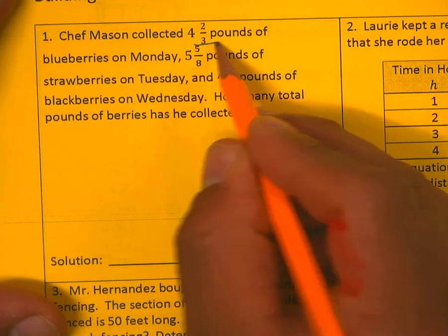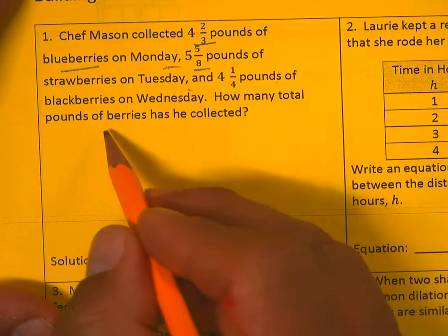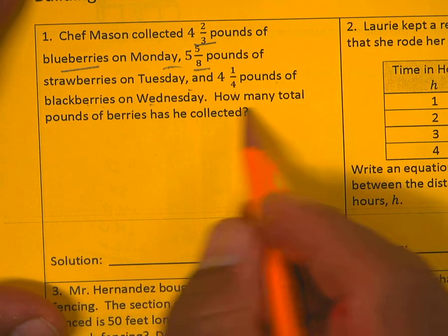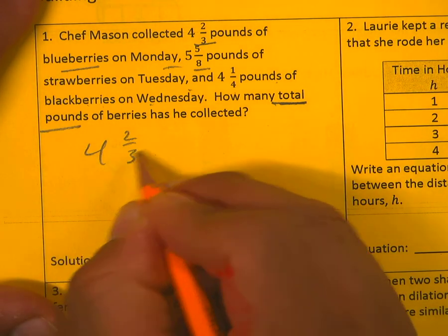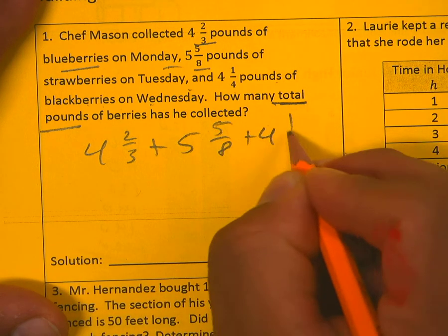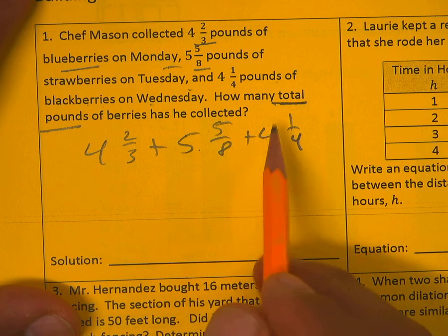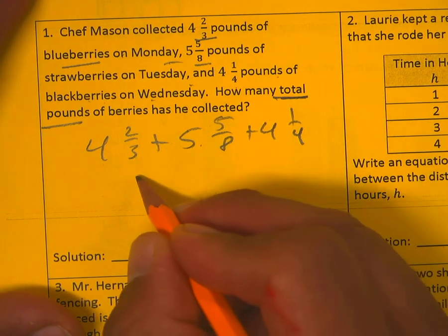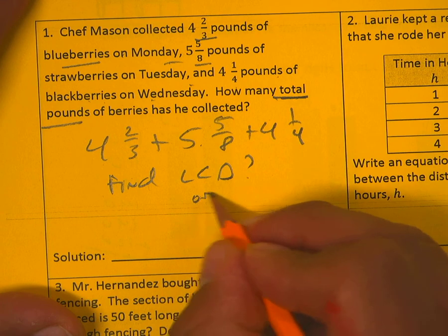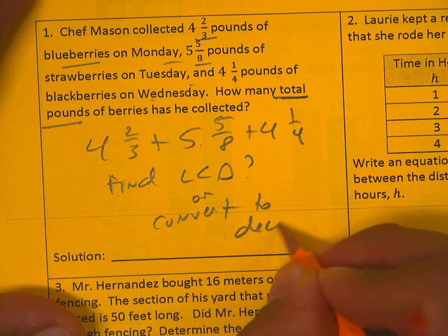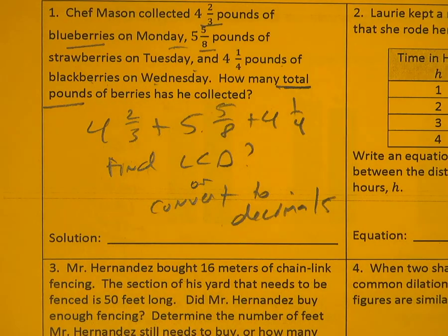Now the back side. Jeff Mason collected 4 and 2/3 pounds of blueberries on Monday, 5 and 5/8 pounds of strawberries on Tuesday, and 4 and 1/4 pounds of blackberries on Wednesday. How many total pounds? All you have to do is add Monday, Tuesday, and Wednesday together. You can find an LCD or convert to decimals — you figure out which one you want to do.